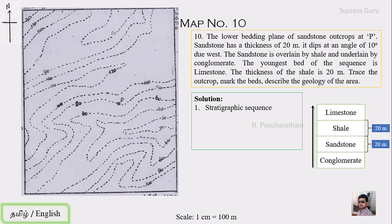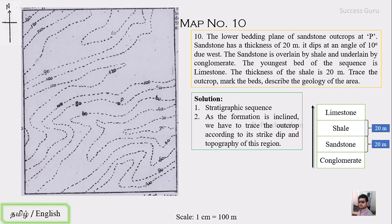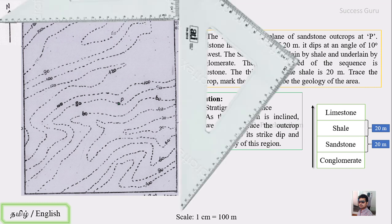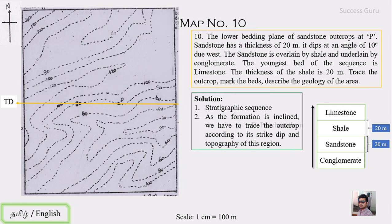Next we have to draw the strike and dip. Since the formation is inclined, we trace the outcrop according to strike, dip, and topography. The dipping direction is given as due west, so instead of tracing from the north arrow, we can simply trace the east-west line from the direction sign on the map. Using two set squares, we trace it across and draw a strike line, mentioning it as true dip. This way, the east-west line on the map itself marks the true dip direction, as it is parallel to east-west.